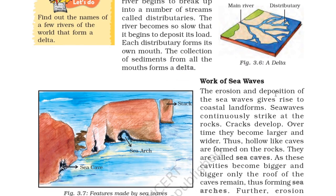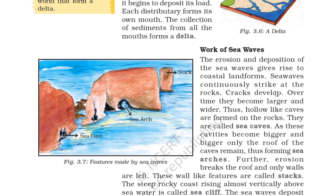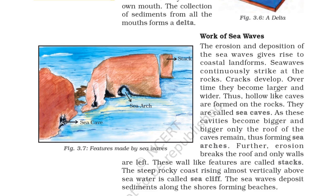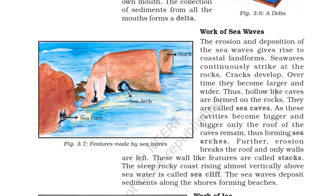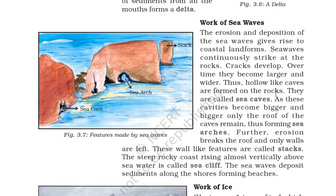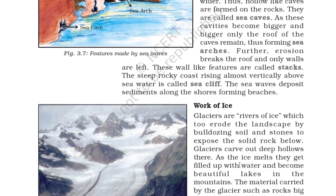Work of sea waves: the erosion and deposition of sea waves give rise to coastal landforms. Sea waves continuously strike at rocks, cracks develop and over time become larger and wider, forming hollow sea caves. As these cavities become bigger, only the roof of the cave remains, forming sea arches. Further erosion breaks the roof and only walls are left — these wall-like features are called stacks. The steep rocky coast rising almost vertically above sea water is called a sea cliff. Sea waves also deposit sediments along the seashore, forming beaches.